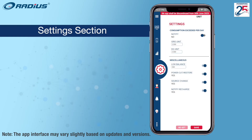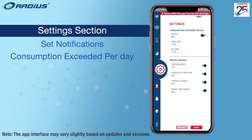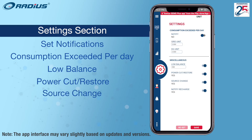The settings section allows users to set notifications for consumption exceeded per day, low balance, power cut restore, supply source change, and notify recharge.